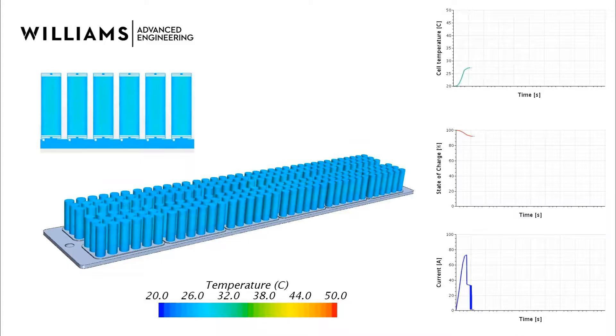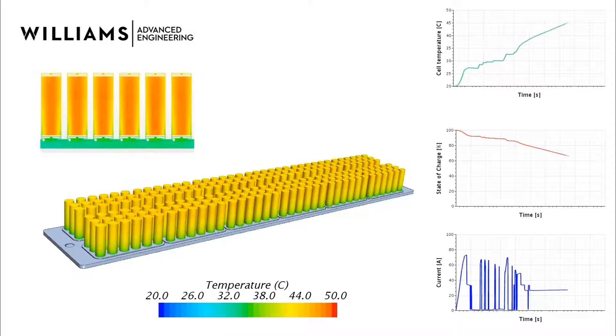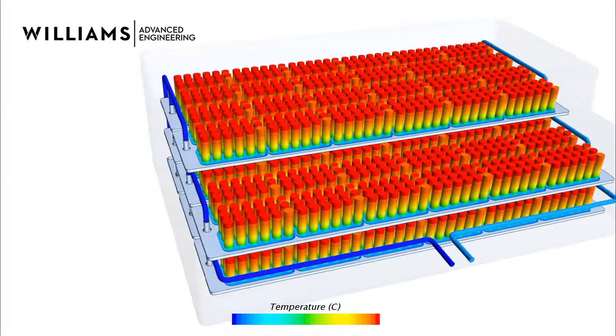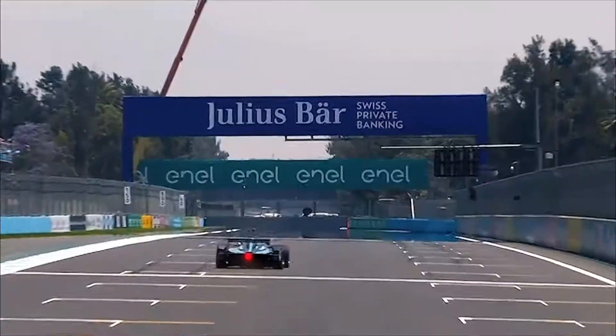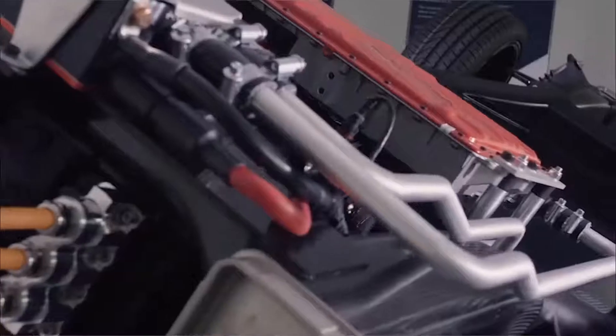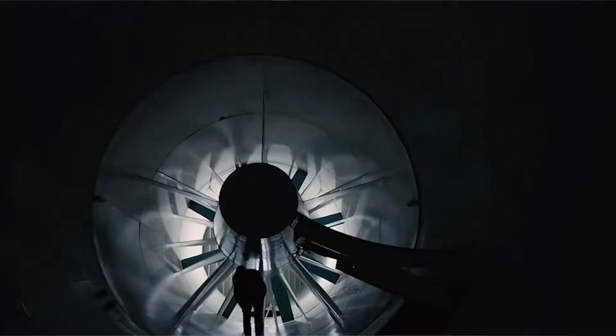CFD simulation gives us the confidence that everything will meet the targets. We don't need to wait until we build the battery and test the vehicle to know that we meet all the targets defined for the project. There is no alternative to not using simulation — it could be more expensive and risky. CFD and 1D simulations have helped us reduce the time to complete programs and develop our batteries extremely fast.